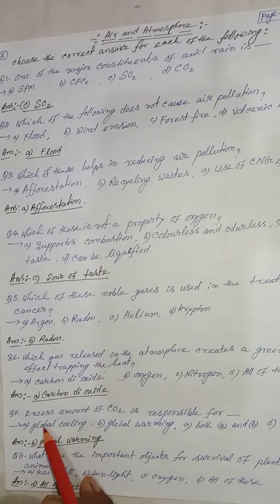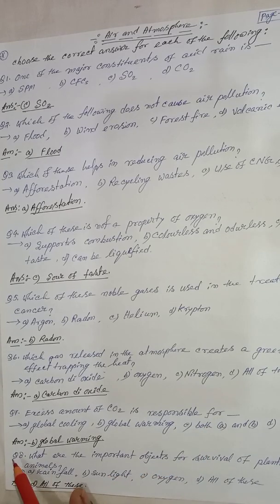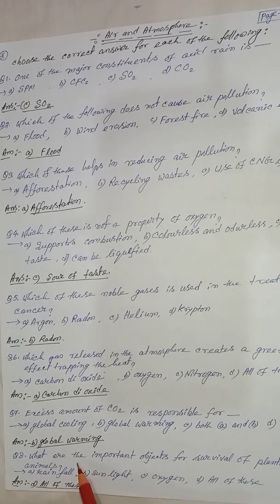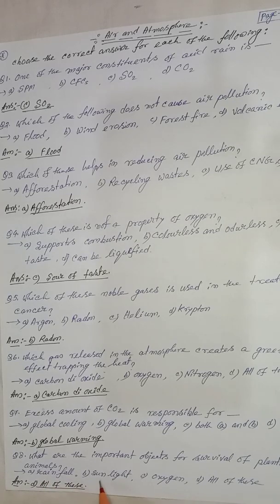Next question: excess amount of carbon dioxide is responsible for option B — global warming. Next question: what are the important things for the survival of plants and animals? The answer is all of the above — rainfall, sunlight, and oxygen.